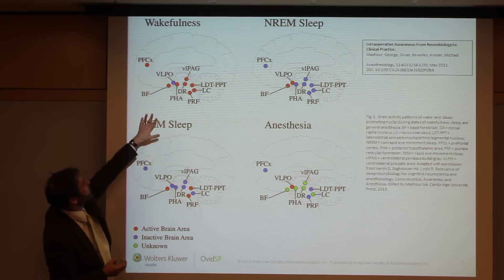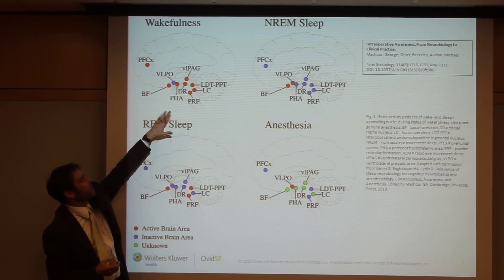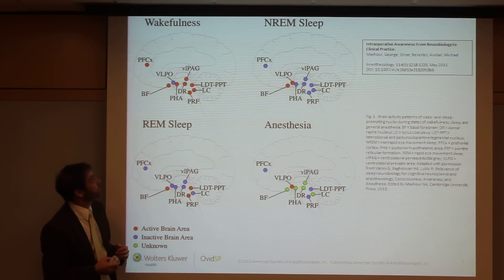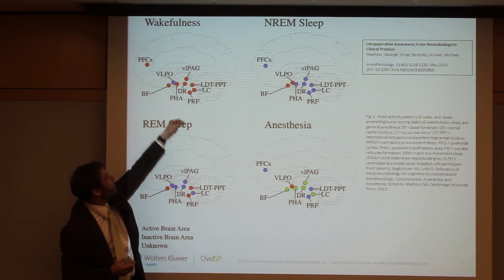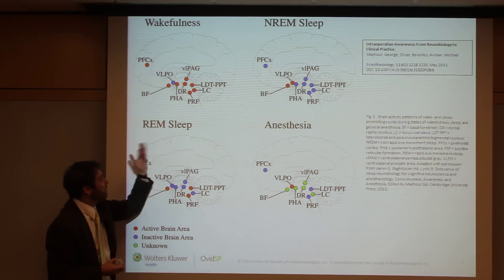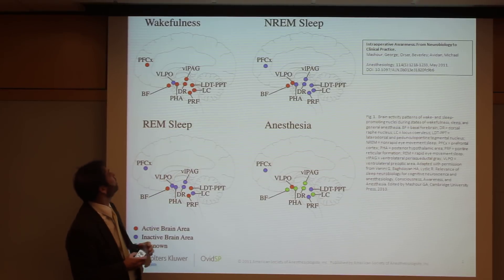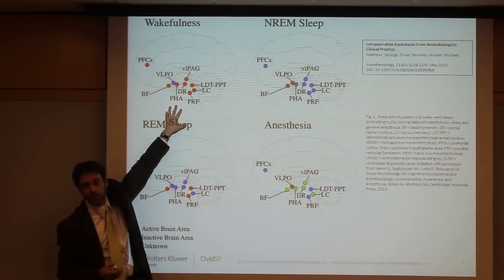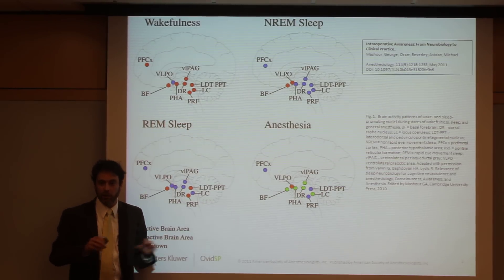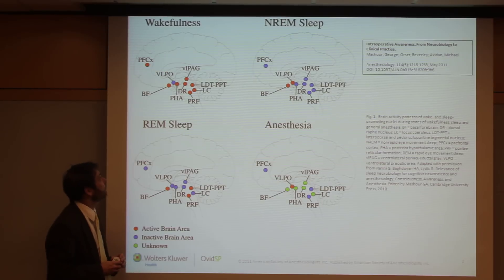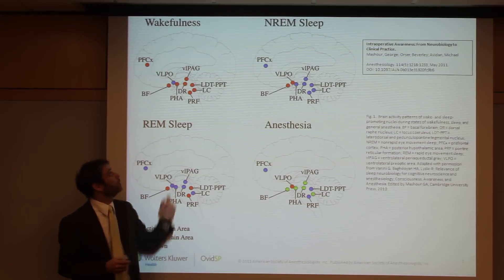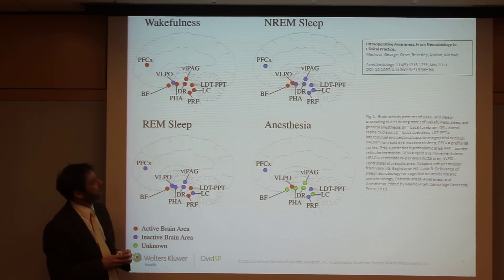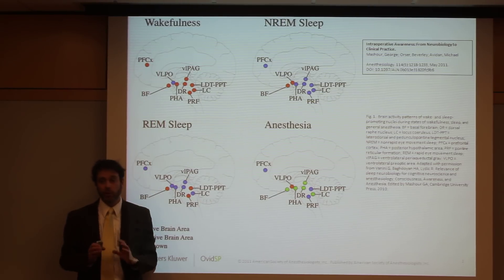If you look at the area on the left-hand side of the slide, all of the nuclei in red are active during wakefulness — for example, the dorsal raphe, the arousal nuclei in the brainstem, the locus coeruleus, the basal forebrain, and the prefrontal cortex, which is admittedly a cortical area. Most of these areas that promote arousal are in the subcortical areas. There is also the ventrolateral preoptic area, which is important in promoting sleep and is inactive during wakefulness.